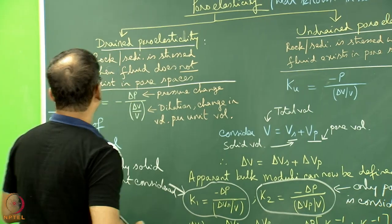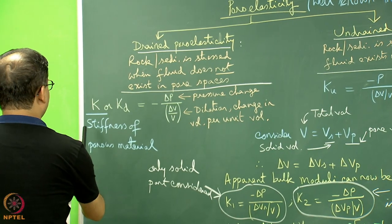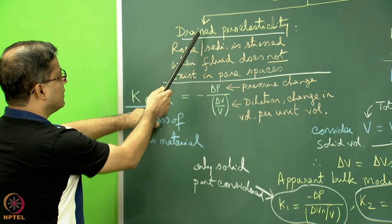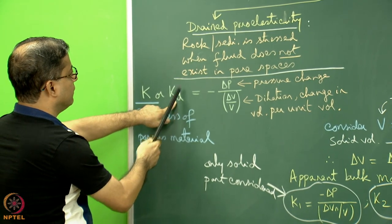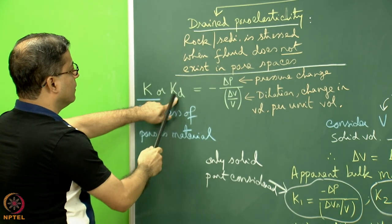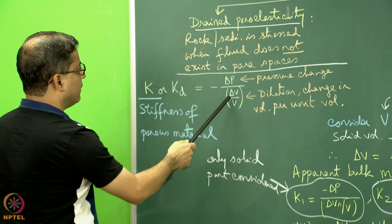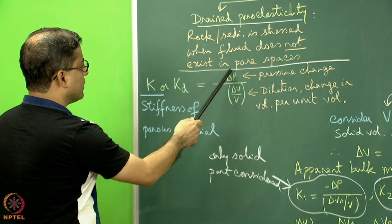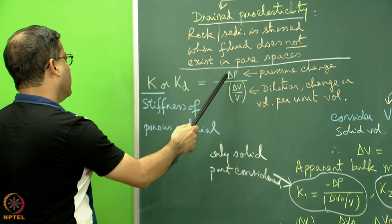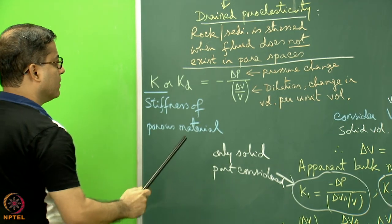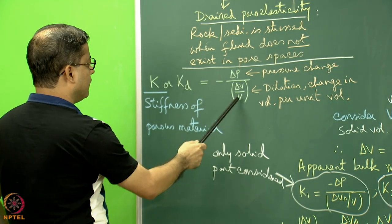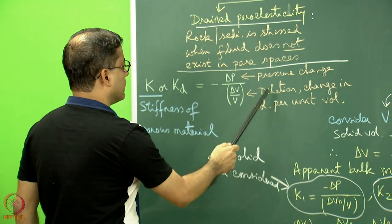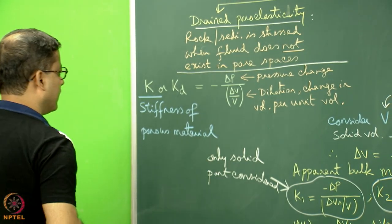We can define the stiffness of a porous material, K or K_D, for the drained poroelasticity case. K_D for the drained condition is equal to minus delta P divided by delta V divided by V. Delta P is a pressure change applied on the rock or sediment, delta V is a change in volume, and V is the initial volume. We can also call delta V by V as dilation or volumetric strain.